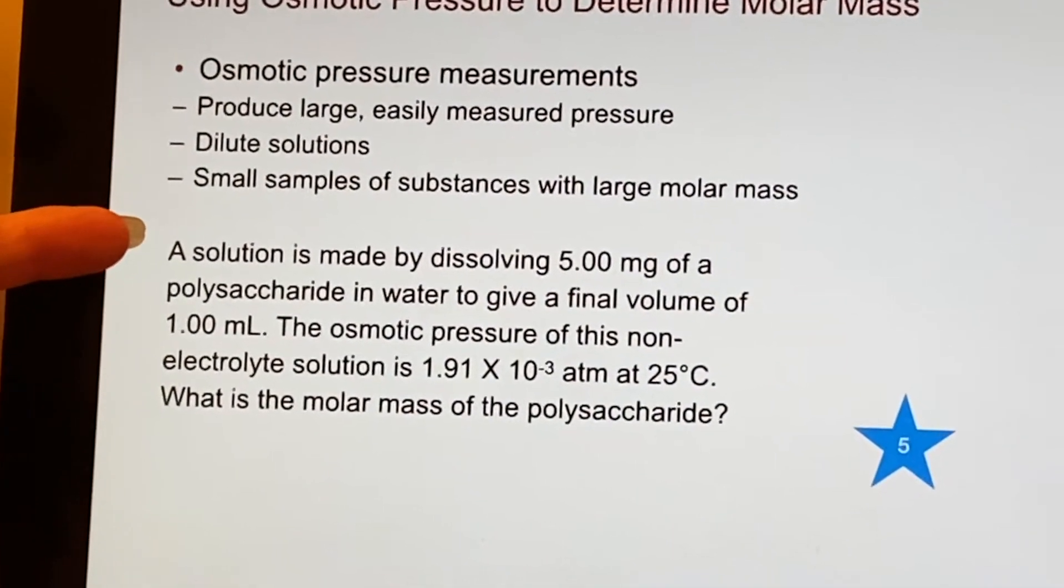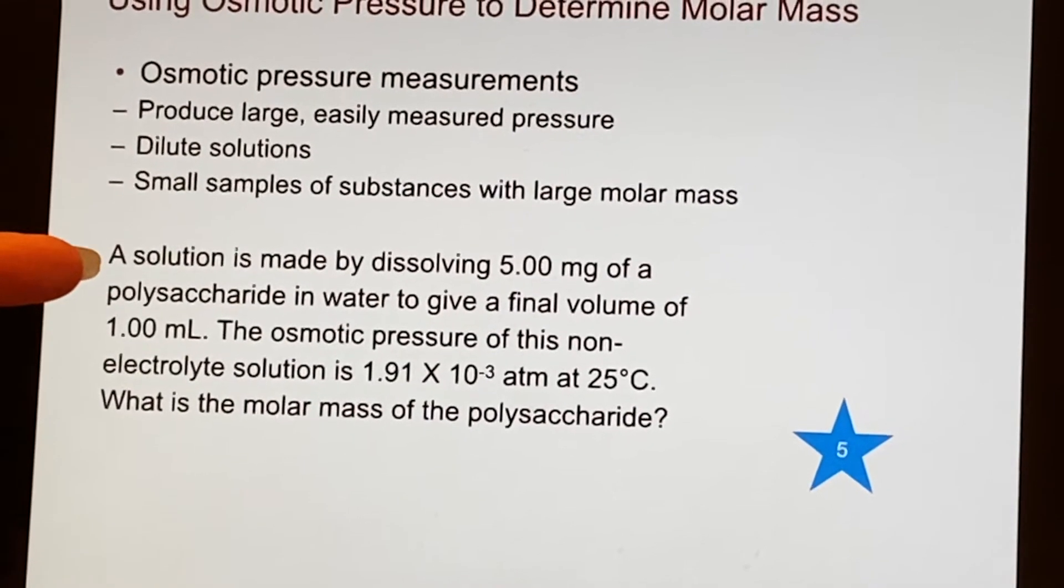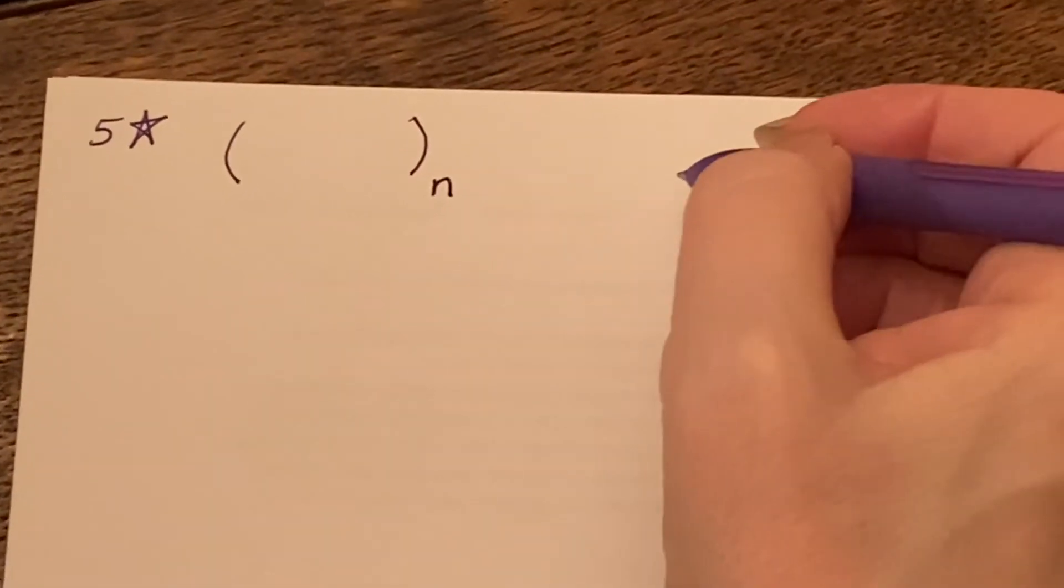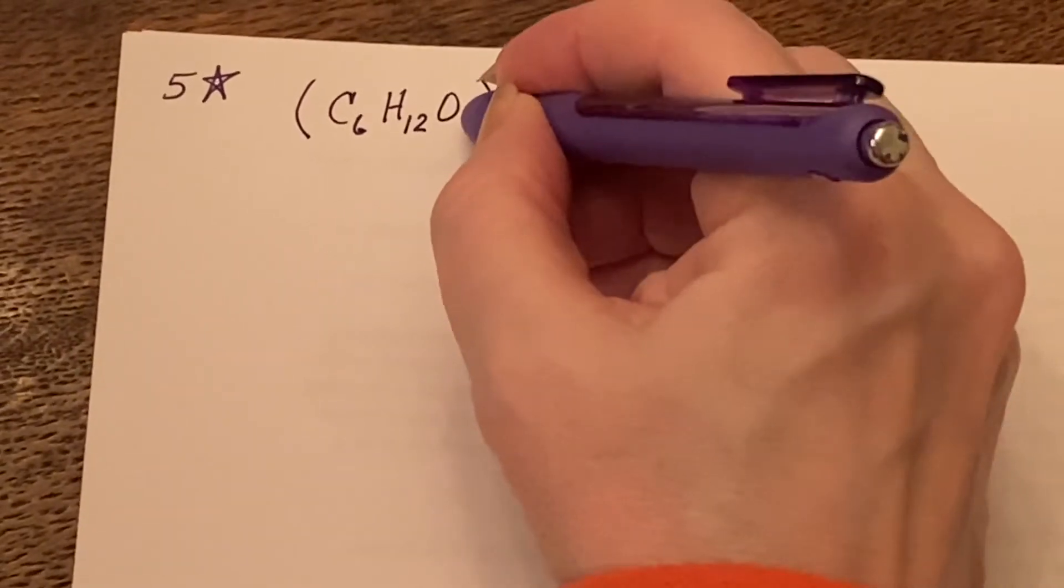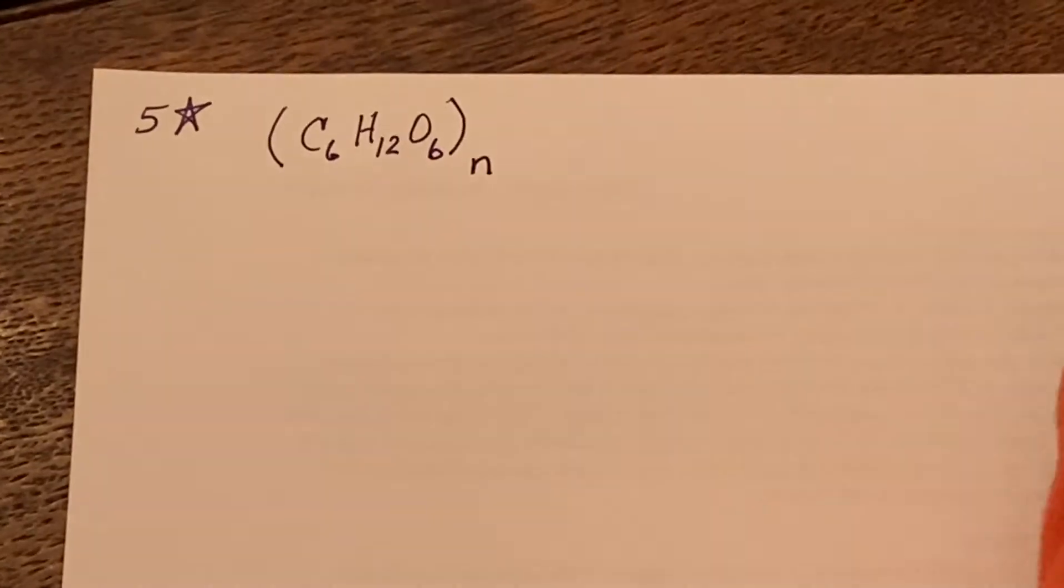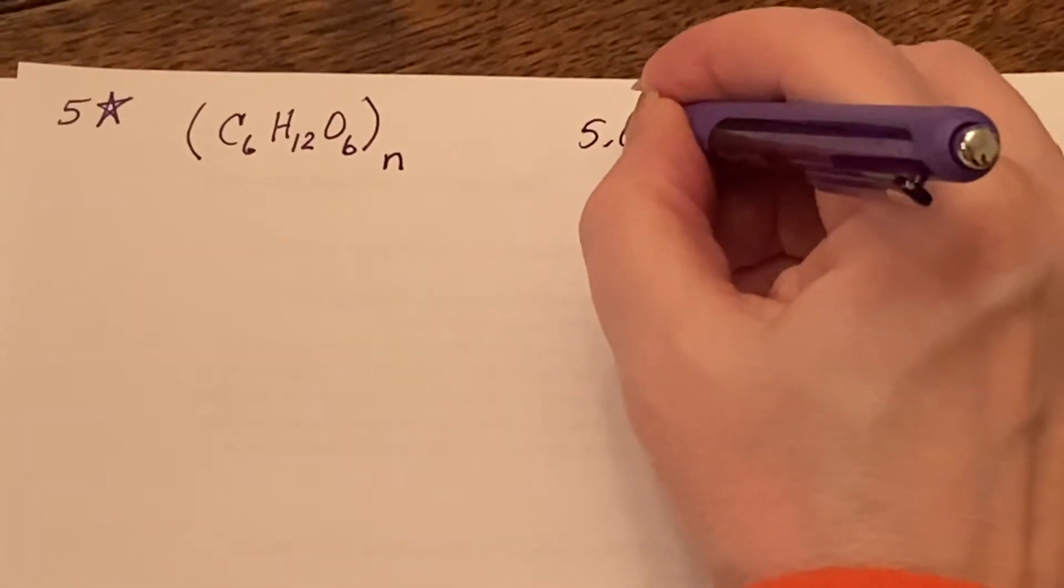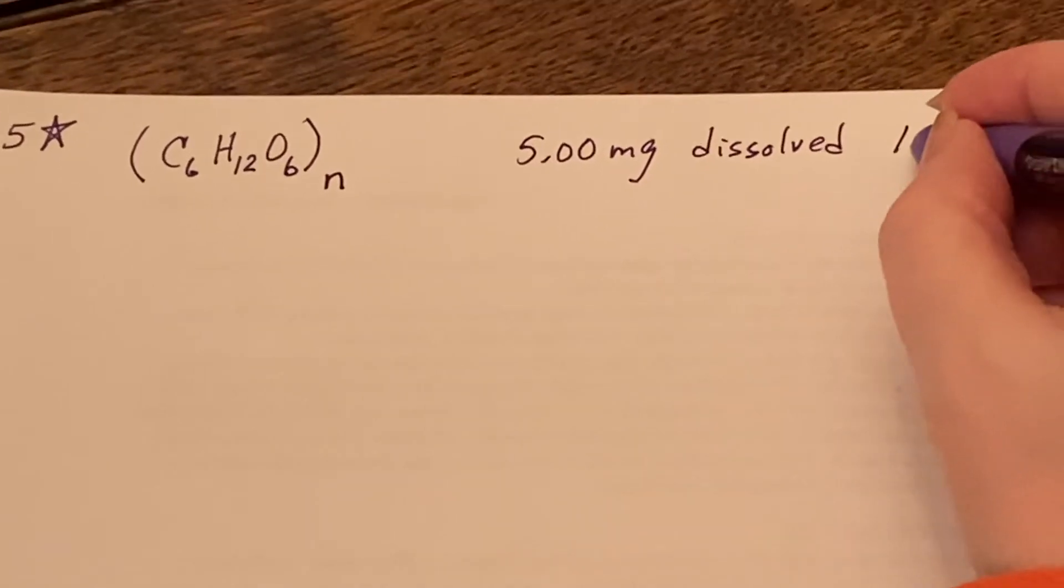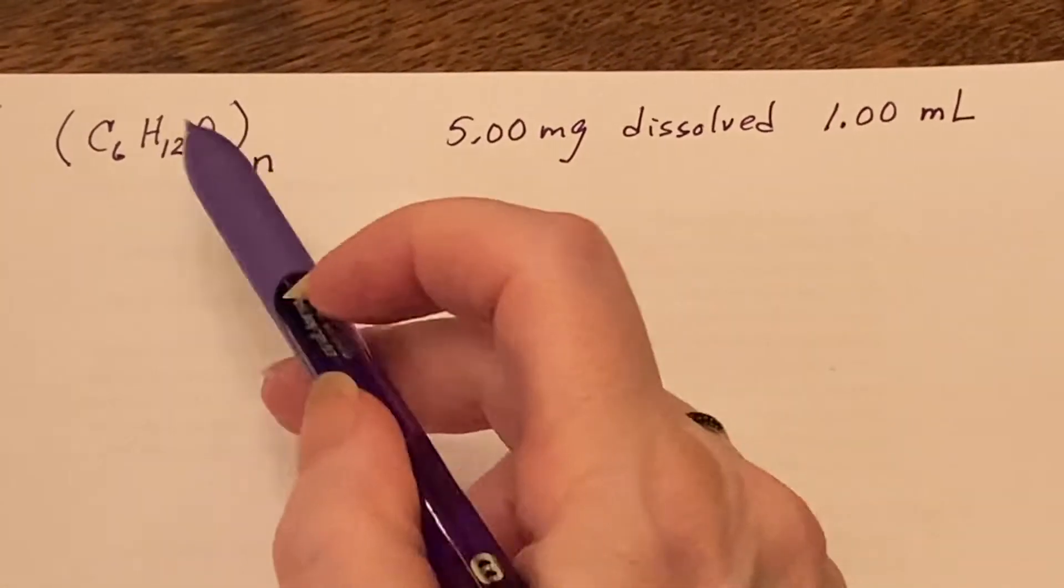So we are going to try doing one of our little examples. It says I'm making a solution - in this solution I am dissolving 5 milligrams of a polysaccharide. Poly would be a recurring unit - well, I don't know how many - but if it's a saccharide, it's going to have C6H12O6 as its pattern. That's what's going to be repeated over and over again. What we don't know is how many. We know that it's 5.00 milligrams that was dissolved and that it was in enough liquid, so water, so that we made 1 milliliter.